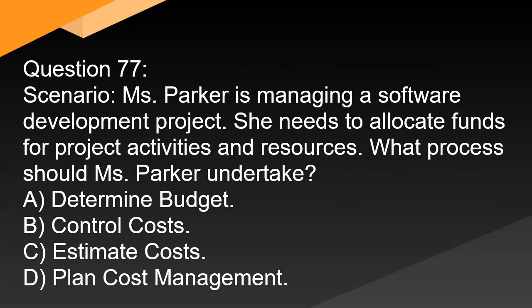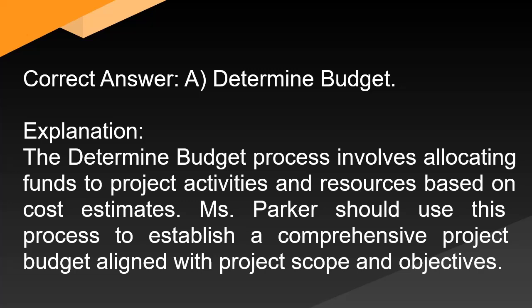Question 77: Ms. Parker is managing a software development project. She needs to allocate funds for project activities and resources. What process should Ms. Parker undertake? A. Determine budget. B. Control costs. C. Estimate costs. D. Plan cost management. Correct answer: A. Determine budget. Explanation: The determine budget process involves allocating funds to project activities and resources based on cost estimates. Ms. Parker should use this process to establish a comprehensive project budget aligned with project scope and objectives.